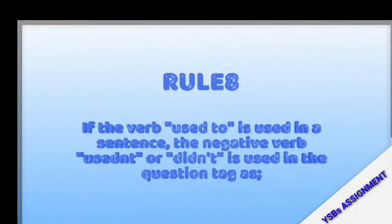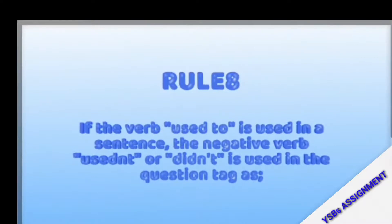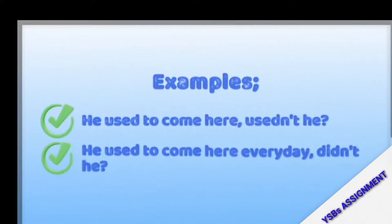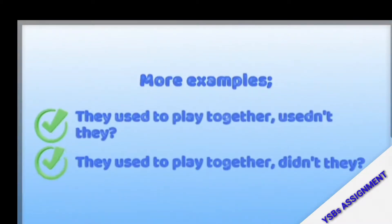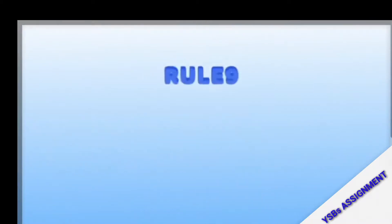Rule number eight: if 'used to' is used in a sentence, either 'usedn't' or 'didn't' can be used in the question tag — two possible question tags. Examples: 'He used to come here every day, usedn't he?' or 'He used to come here every day, didn't he?' / 'They used to play together, usedn't they?' or 'They used to play together, didn't they?' Both make sense, so you can use either.